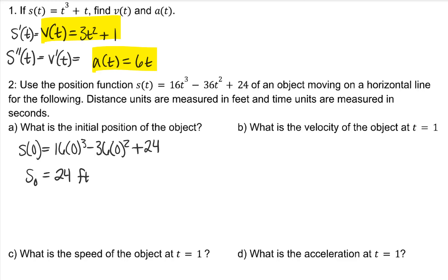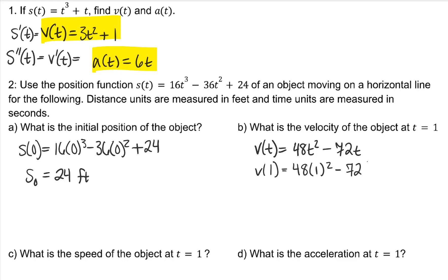What is the velocity of the object at t equals 1? First, we're going to find the velocity function, which is the derivative of the position function, and then we plug in 1. The units for velocity are units per time, so feet per second.